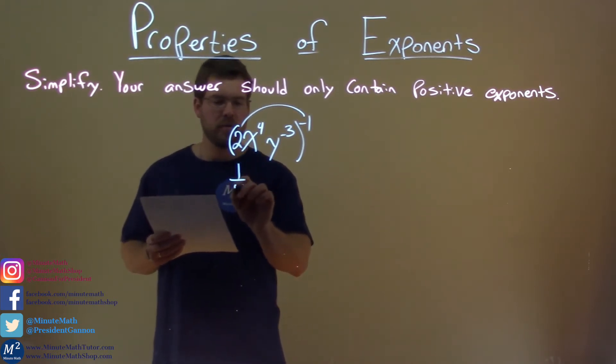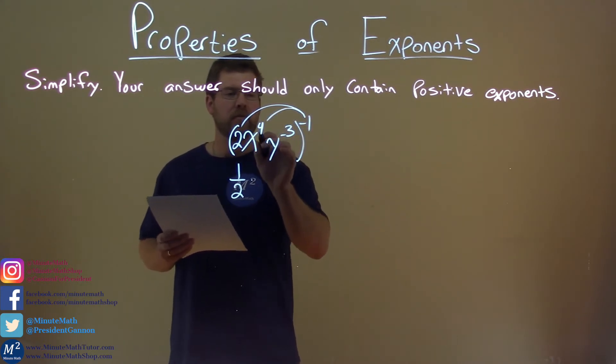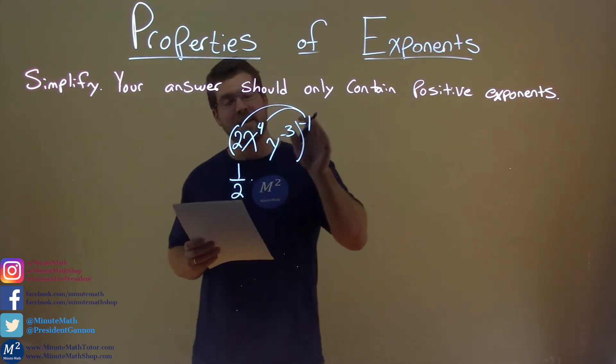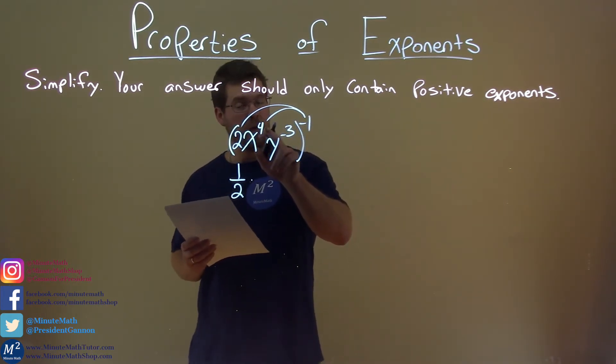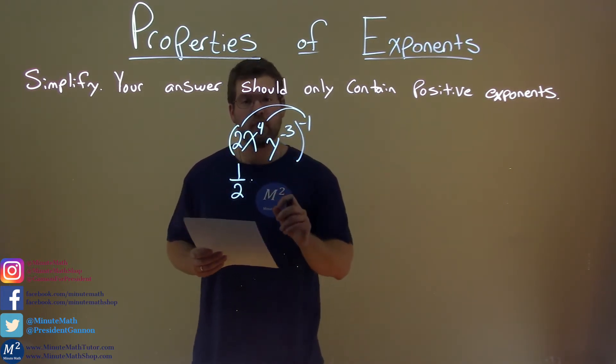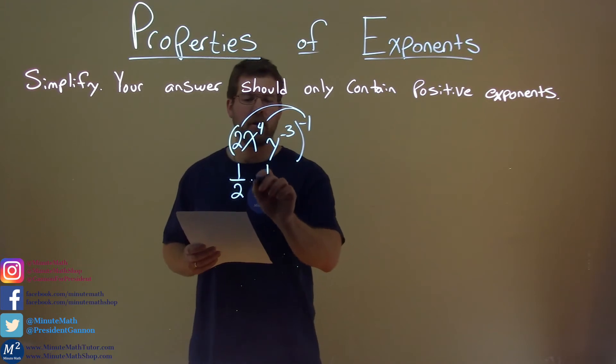So we have 1 over 2 here times x to the 4th to the negative 1 power. Same thing, multiply the exponents, we have a negative 4. x to the negative 4 right here is the same thing as 1 over x to the positive 4th power.